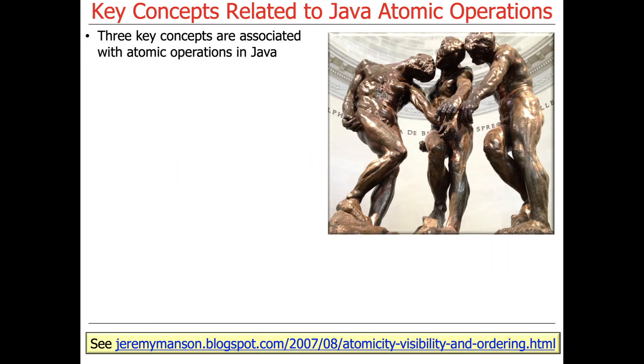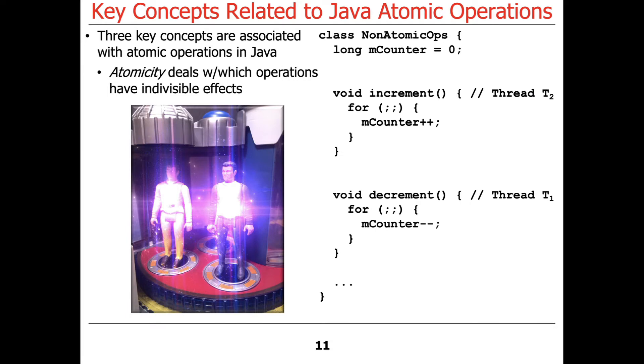So let's talk about some of the key concepts associated with this. There are three very important concepts associated with atomic operations in Java. The first is atomicity, which deals with operations having indivisible effects. Which operations have indivisible effects?